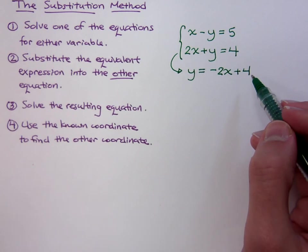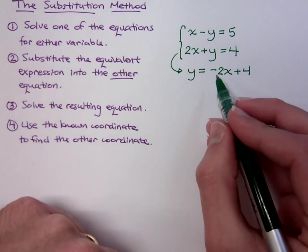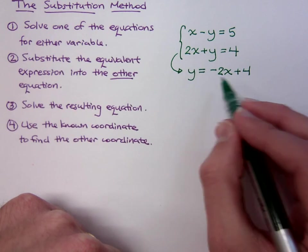We were working with a perimeter word problem. I'm saying that y equals negative 2x plus 4. That means that y is the same as negative 2x plus 4.